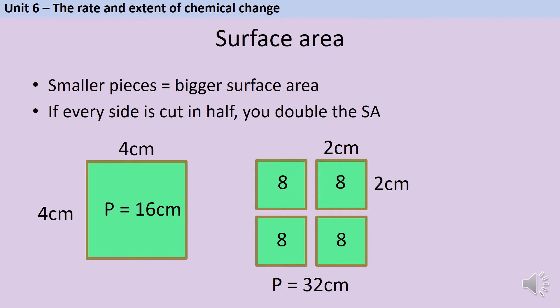As I cut the larger square up each smaller piece obviously has a smaller surface area than my original big square. But if I add up the four smaller squares their surface area together is much bigger than the one original piece. In fact if you take a cube and cut each side in half to make eight smaller cubes you double the surface area. But the volume stays the same.